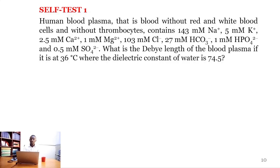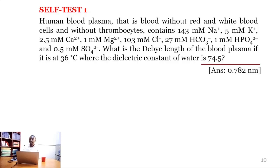Our first self-test question: Human blood plasma — that is blood without red and white blood cells and without thrombocytes — contains 143 mM sodium ion, 5 mM potassium ion, 2.5 mM calcium ion, 1 mM magnesium ion, 103 mM chloride ion, 27 mM bicarbonate ion, 1 mM diphosphate ion, and 0.5 mM sulfate ion. What is the Debye length of blood plasma if it is at 36°C, where the dielectric constant of water is 74.5? The answer is 0.782 nanometer.